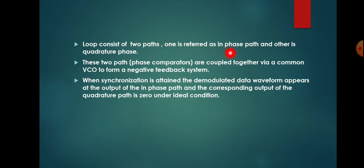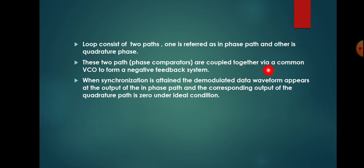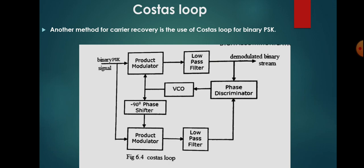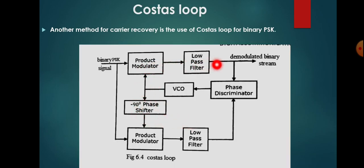This loop consists of two paths: one is referred to as the in-phase path and the other is the quadrature phase path. The lower path is called the quadrature phase path because there is a 90-degree phase shifter. These two paths, with their phase comparators, are coupled together by a common VCO to form a negative feedback system. The outputs of the in-phase path and quadrature phase path are compared in the phase discriminator and given to the VCO. When synchronization is attained, the demodulated data waveform appears at the output of the in-phase path, and the corresponding output of the quadrature phase path is zero under ideal conditions.